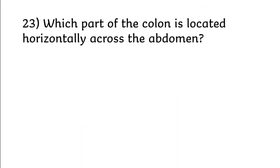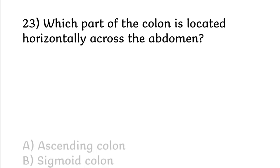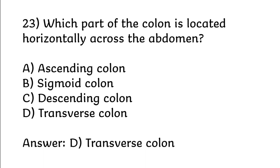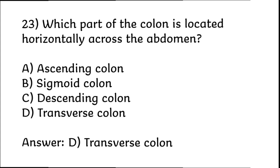Which part of the colon is located horizontally across the abdomen? Ascending colon, sigmoid colon, descending colon, transverse colon. Correct answer is Option D: Transverse colon.